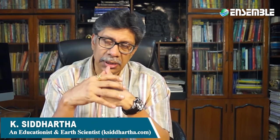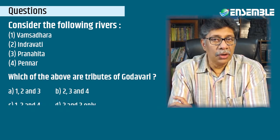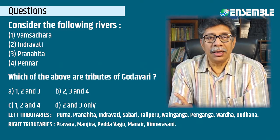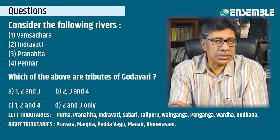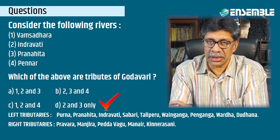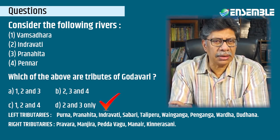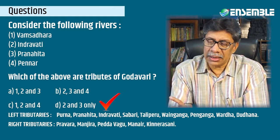That was a fact-based question — if the student knew the answer, they could answer it, otherwise there was no way. The second question asked: which of the following — Vamsadhara, Indravati, Pranhita, Pennar — are tributaries of Godavari? The left-hand tributaries of Godavari include Purna, Pranhita, Indravati, Sabari, Taliperu, Wainganga, Penganga, Wardha, and Dudna. The right-hand tributaries include Pravara, Manjira, Pedda Vagu, Maner, and Kinnerasani. Once you know these, such questions become easy to answer. That was again fact-based.